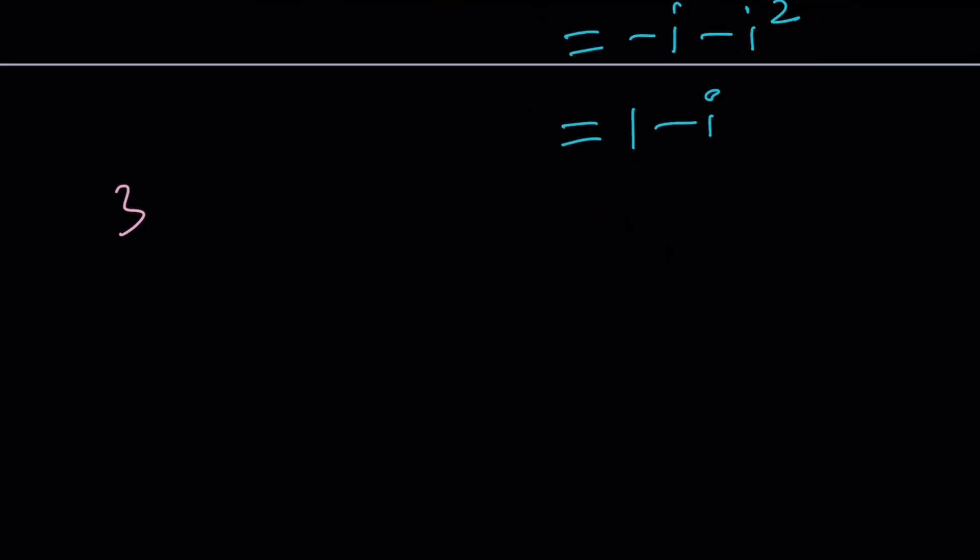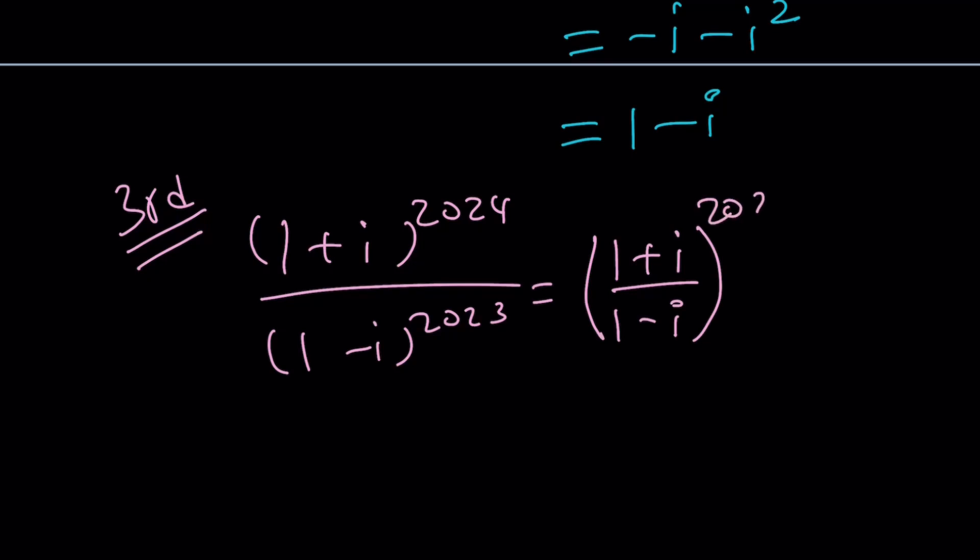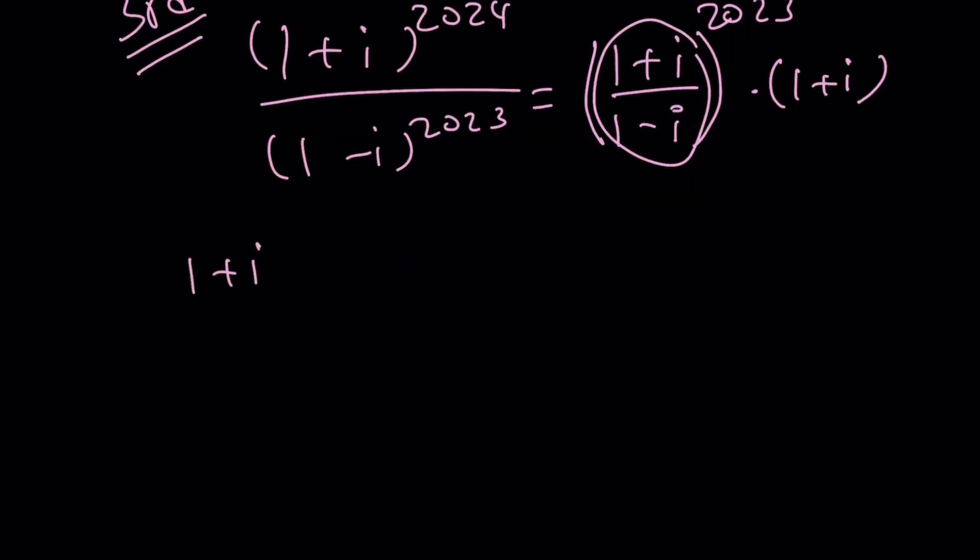Let's go ahead and talk about the third method real quick. Because I think we can solve this problem in probably more than three ways. But I can quickly think of three methods off the top of my head. And here's the third method. Since we have the powers that are so close, why don't we just write it like this? We can take these two together and raise it to the power of 2,023. That will take care of everything except we're going to have a leftover, which is 1 plus i. That's going to give you the 2,024, right? Now, inside here, we can simplify that. What is 1 plus i over 1 minus i?